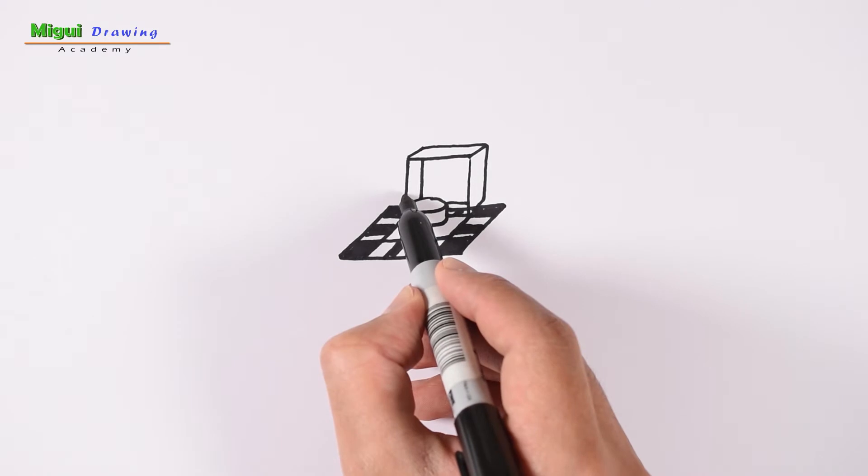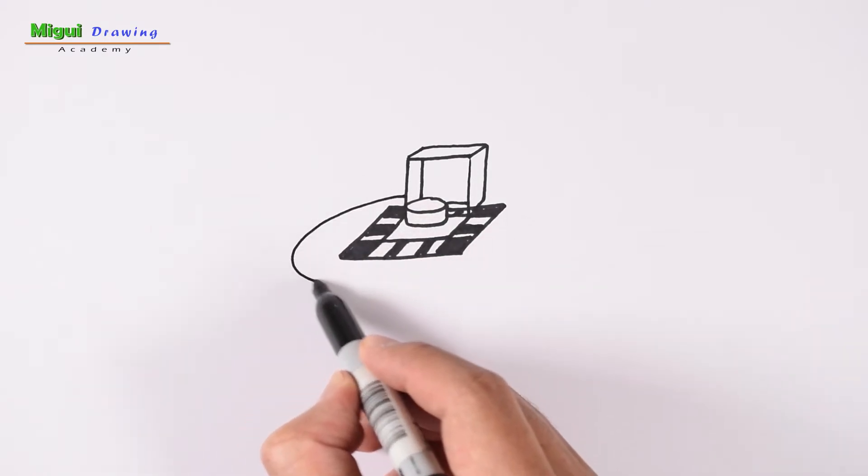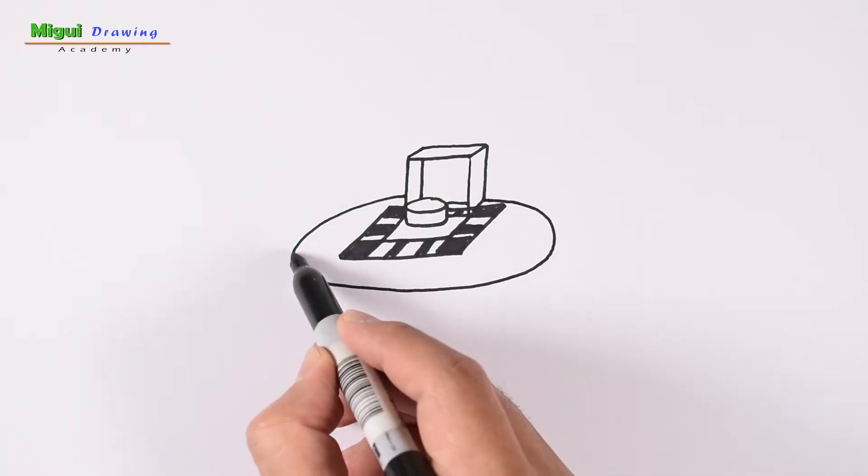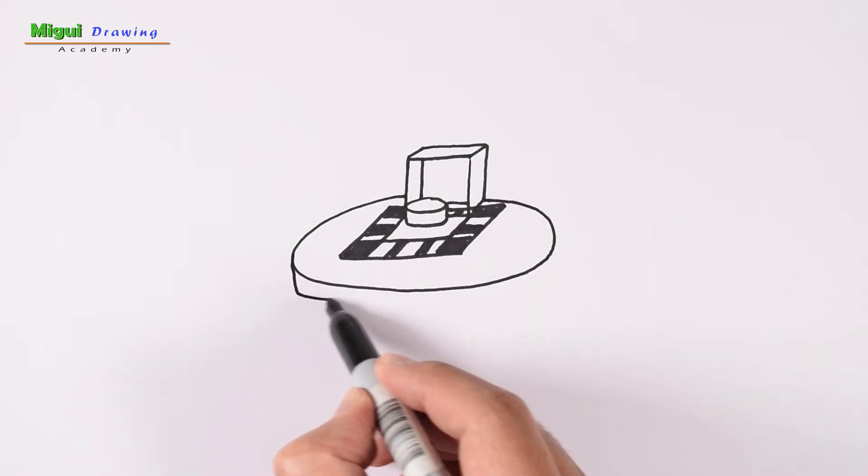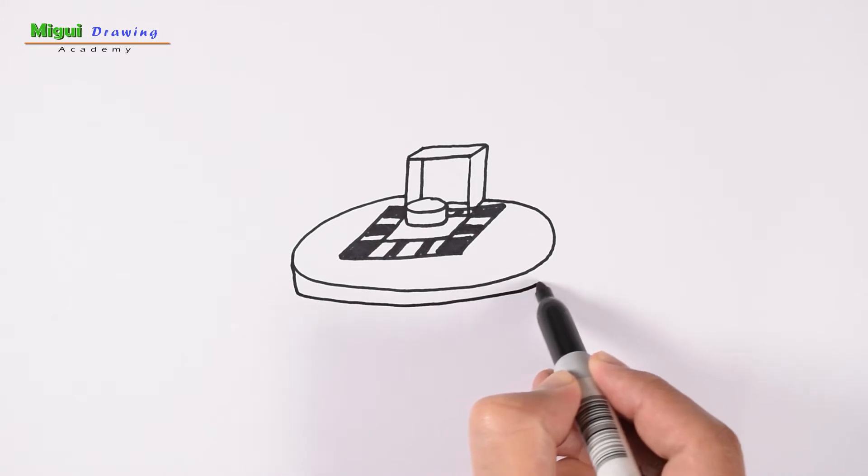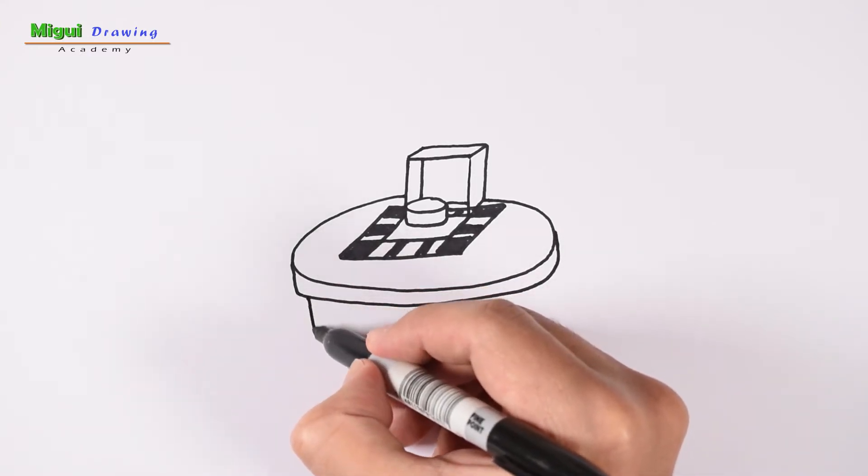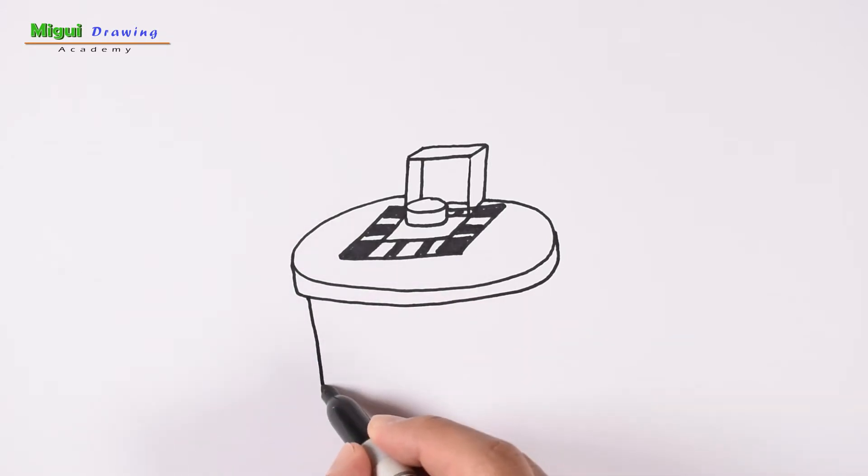We're going to create the table. One point, crossing the front and going back. The thickness of the table, and then finish with two lines at the bottom.